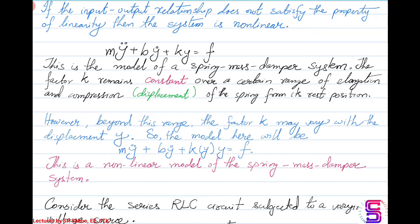For example, consider the spring-mass-damper system whose dynamic equation is given by m·ÿ + b·ẏ + ky = f, where m is the mass connected to the spring, k is the spring constant, and b is the damper coefficient. The factor k remains constant over a certain range of elongation or compression of the spring about its rest position.